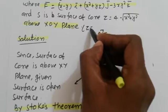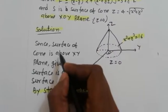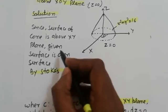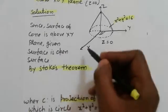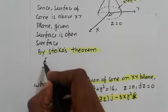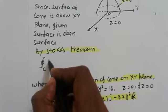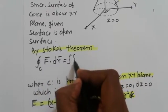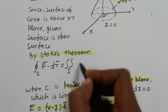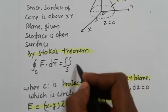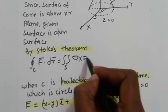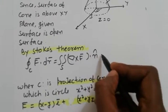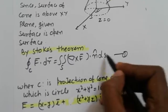Since the surface of the cone is above the xy-plane, the given surface is an open surface. By Stokes' theorem: the closed line integral C of F·dr equals the double integral over surface S of (∇×F)·n̂ dS. This is equation number 1.